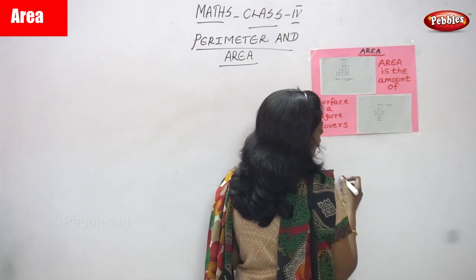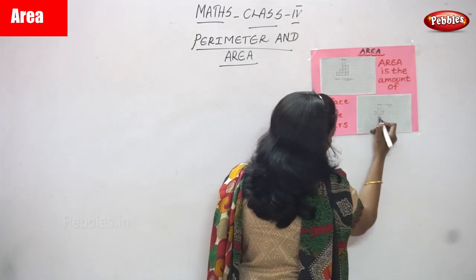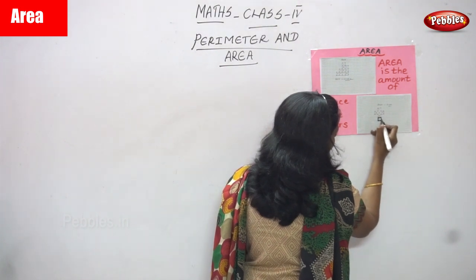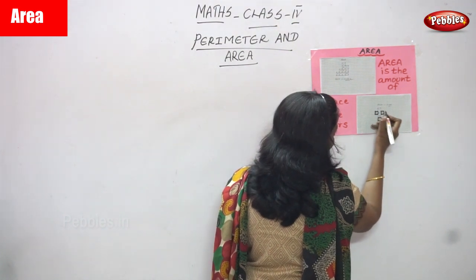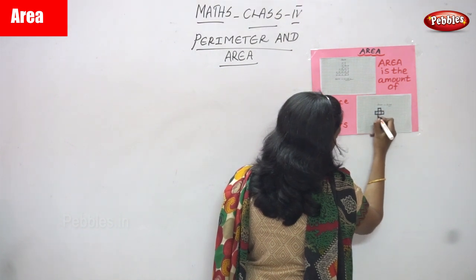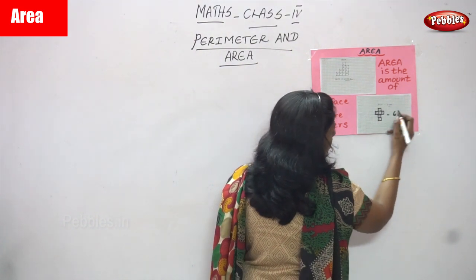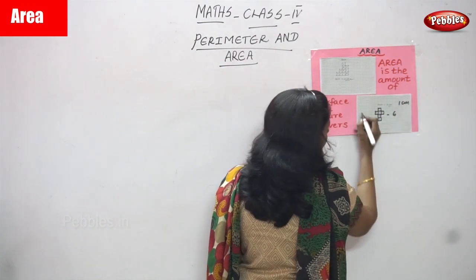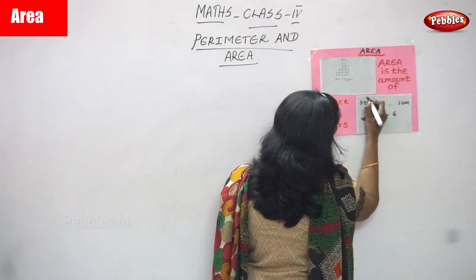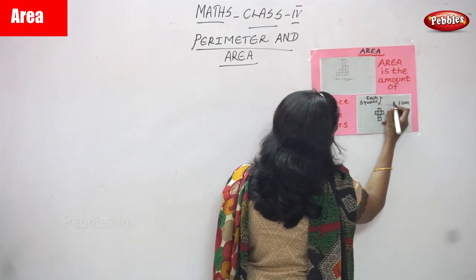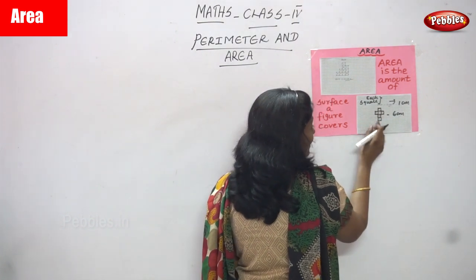Look at this — how many squares? One, two, three, four, five, six squares. Each square you consider as one unit, and each square is equal to one centimeter. So six squares means this figure covers six centimeters. That is the amount of surface this figure covers.